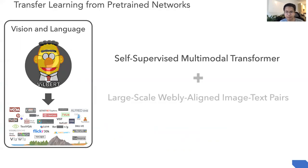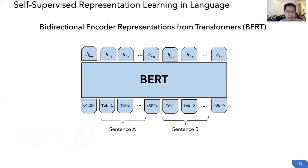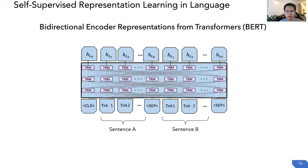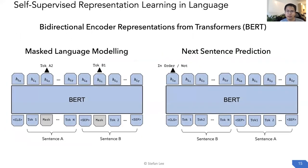For the model side, let's first look at how Bidirectional Encoder Representations from Transformers, called BERT, works. The model takes sentence A and a subsequent sentence B as input, consisting of a stack of transformer layers. It has two objectives: for masked language modeling, it randomly masks some tokens and predicts them using context information. For the next sentence prediction objective, it randomly samples a subsequent sentence and predicts whether it is in order or not.